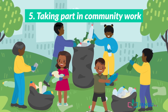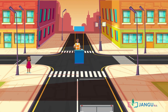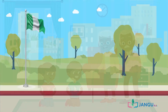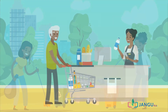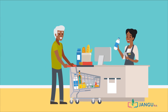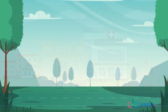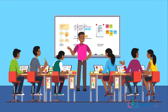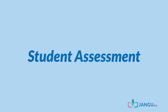Boys and girls, we have now come to the end of this lesson. Today we learned about rules in the community such as obedience, orderliness, cooperation, respect, loyalty, peaceful coexistence, sanitation, and honesty. We also saw some roles of members of the community, which include community development, cooperation, payment of taxes and dues, training the young ones, and taking part in community work. Now it's assessment time, and we'll see you next time.